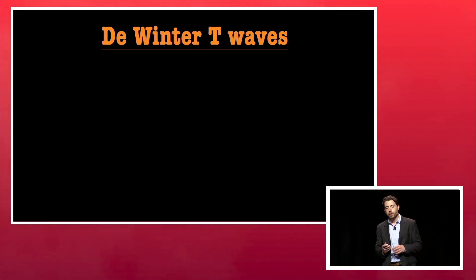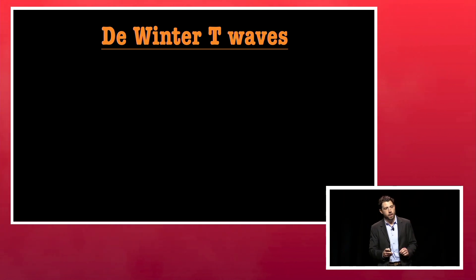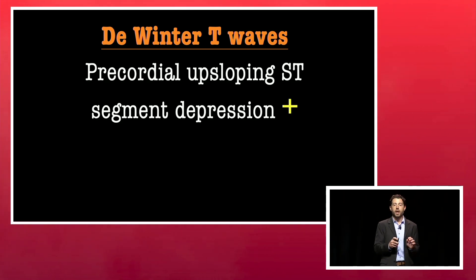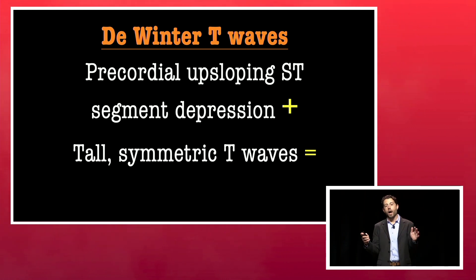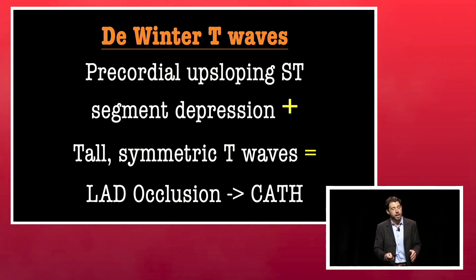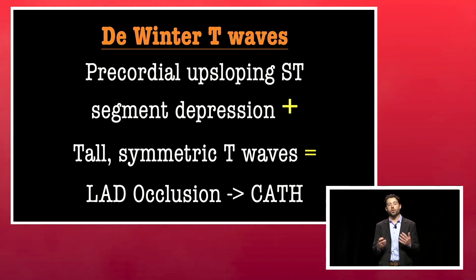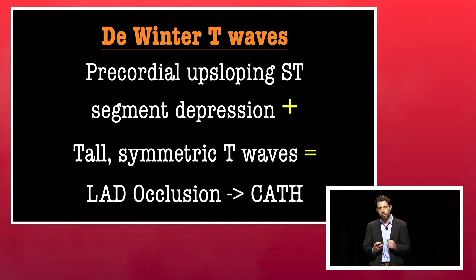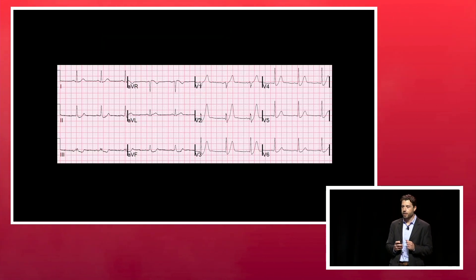So what are de Winter T-waves? In the precordial leads, you'll have ST-segment depression that upslopes into a big, broad, bulky T-wave, and that is diagnostic of an LAD occlusion. This pattern alone is diagnostic of an LAD occlusion. It occurs in about 2% to 3% of all LAD occlusions. These patients need to go to the cath lab.